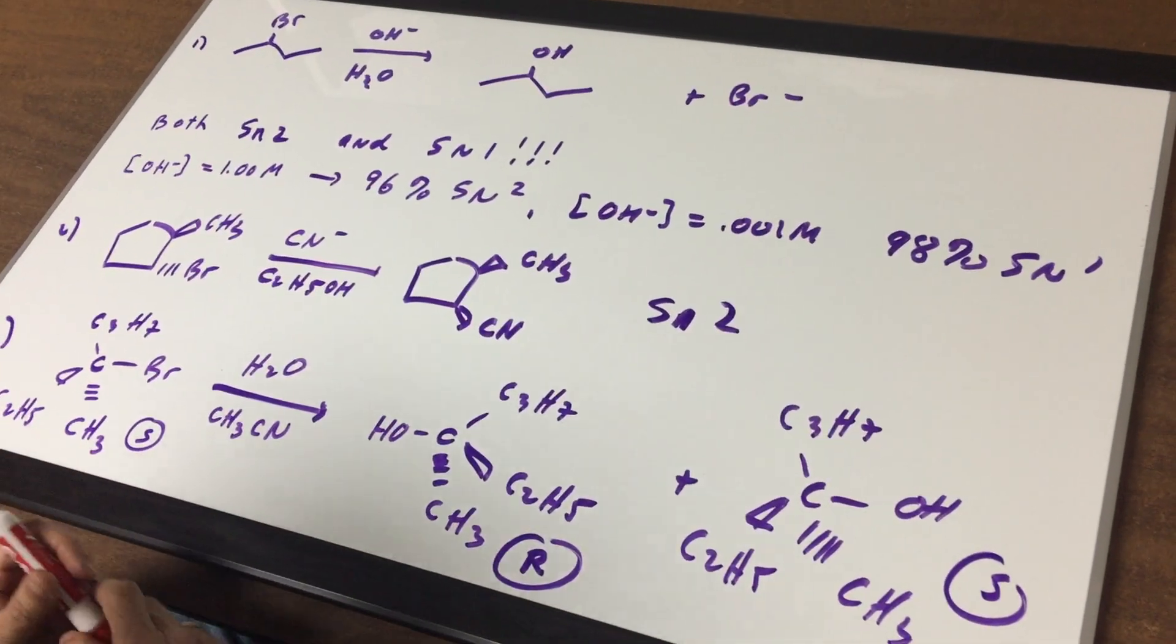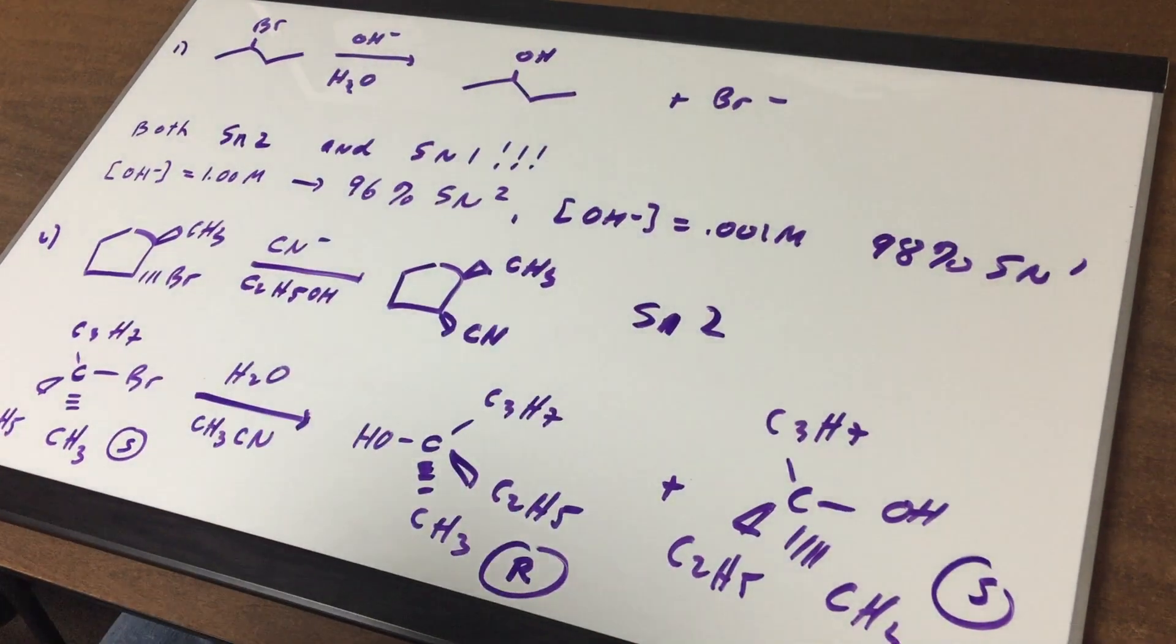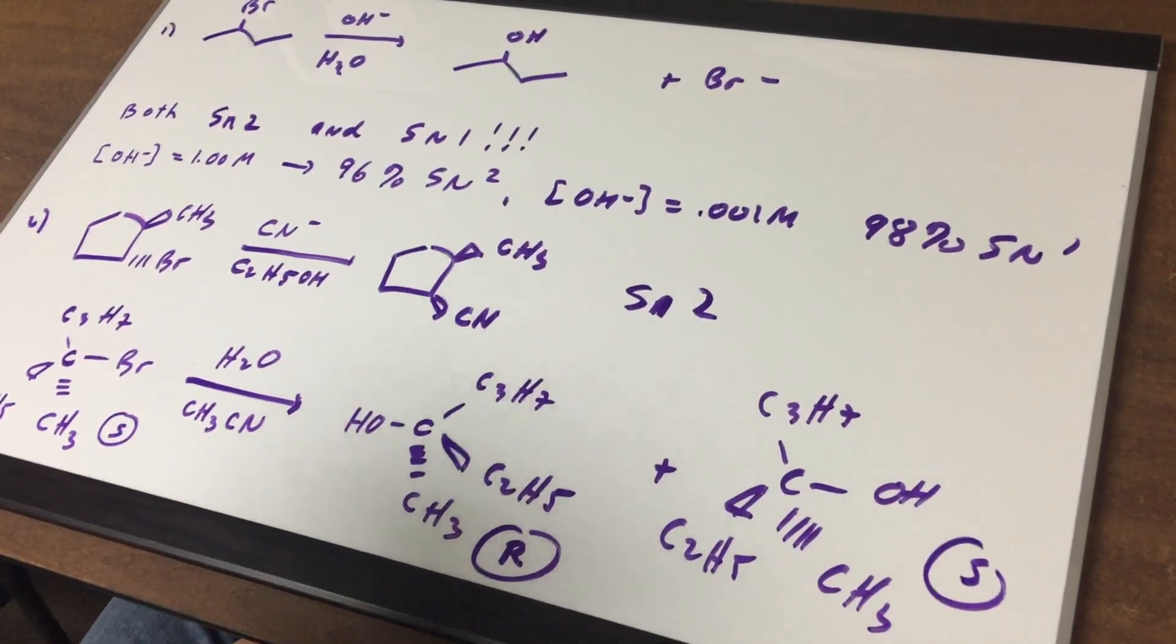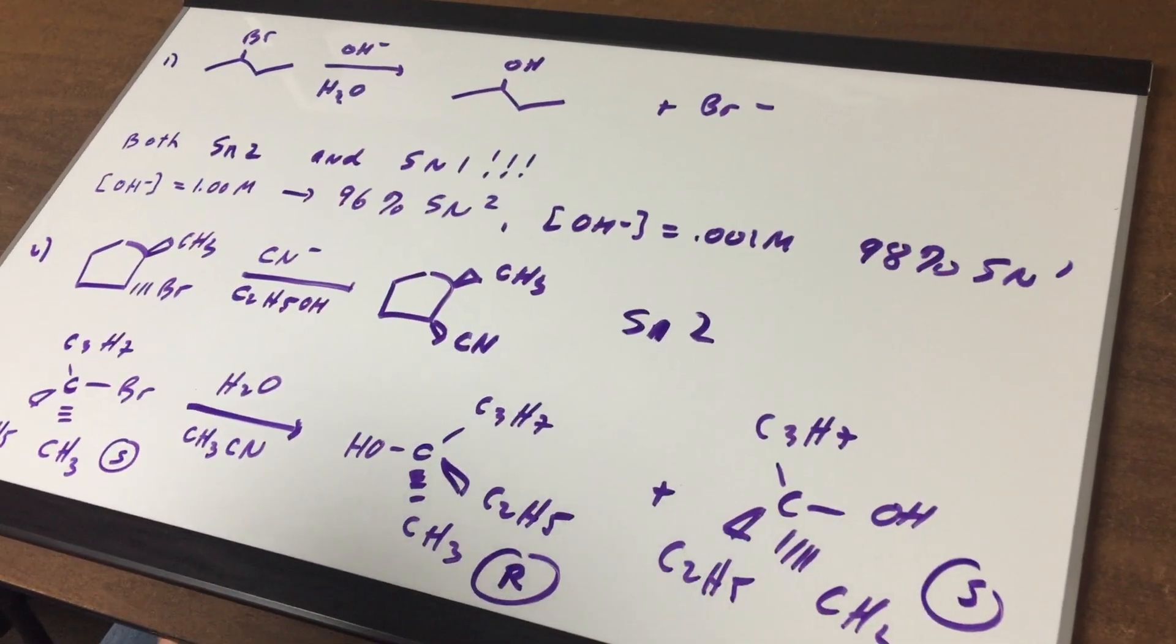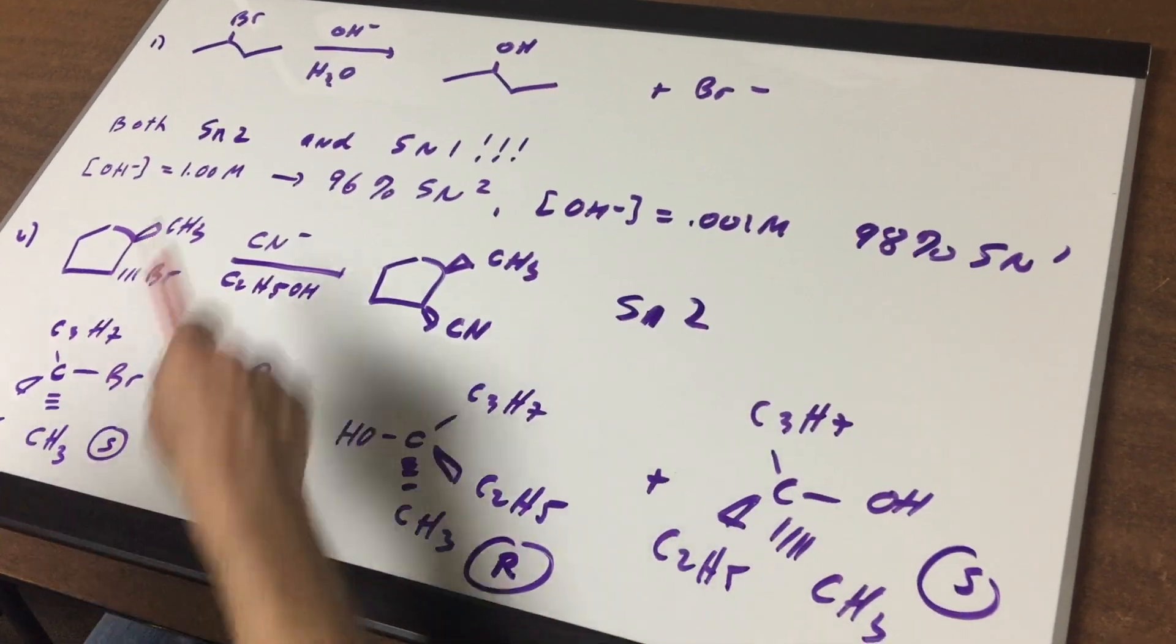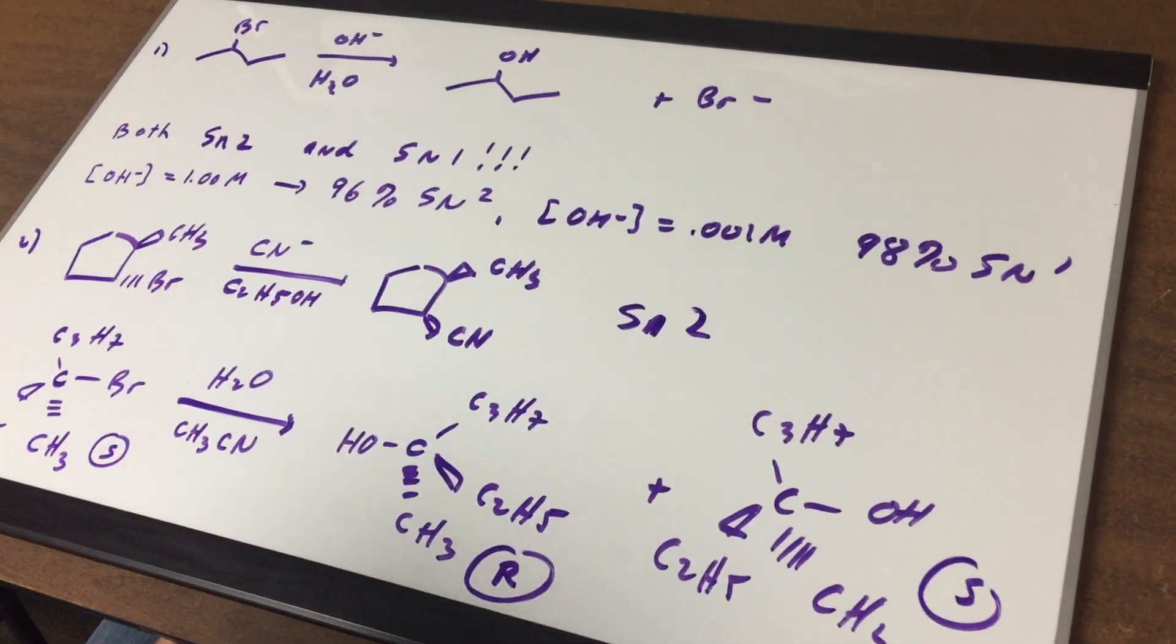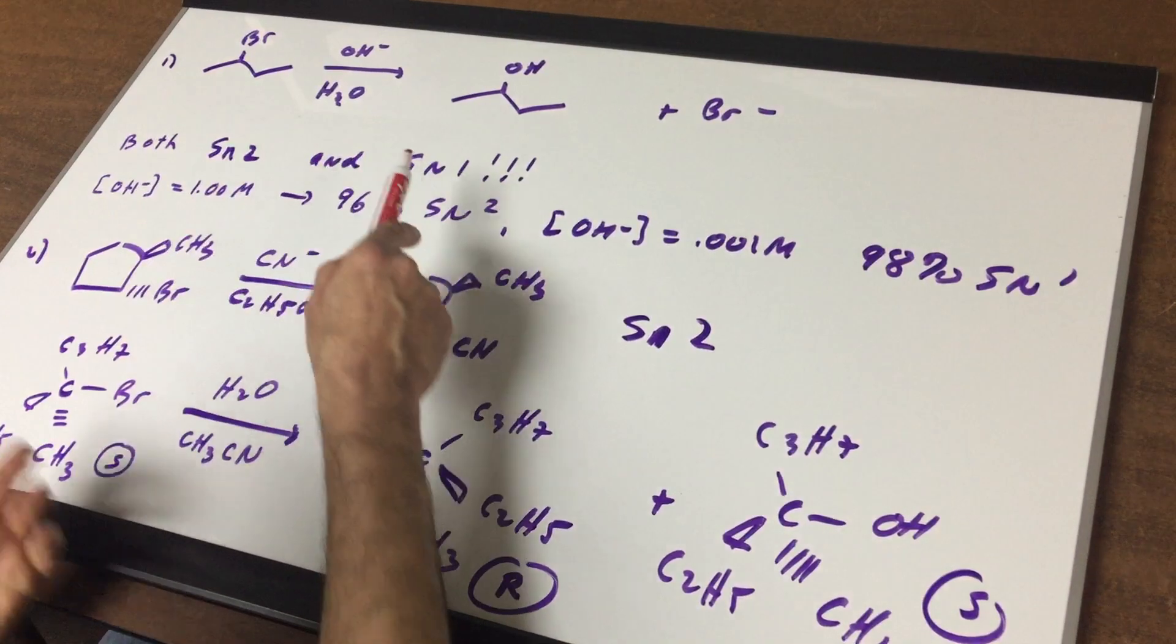Now, what do we see here? I see a secondary halide and a strong nucleophile. Well, that favors SN2. The SN2 process is always favored by a strong nucleophile. On the other hand, the solvent is polar protic and that would favor SN1. So in actuality, both could occur, an SN2 and an SN1.